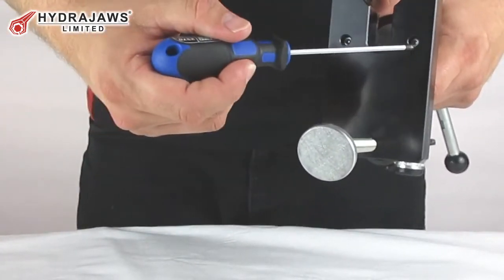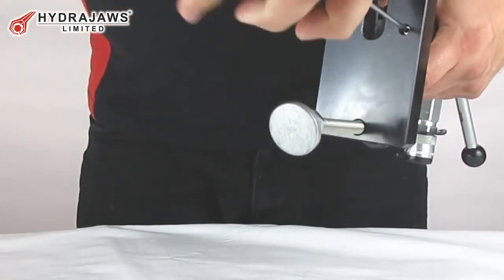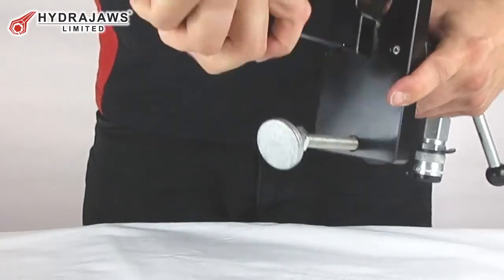Then remove the tester from the bridge by unscrewing the two bridge screws from underneath using the ball driver supplied.